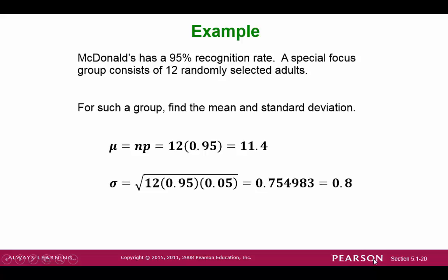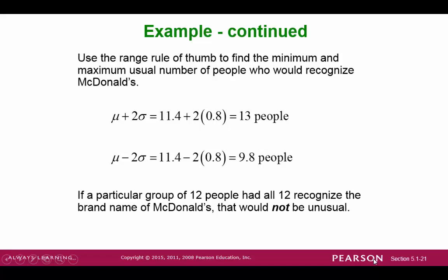The standard deviation is 0.8. Using the range rule of thumb, the usual values turns out to be between 9.8 to 13 people. This means for 12 people, it would be unusual to have less than 9 people to recognize the McDonald's logo. That's the end of Chapter 5. Thank you.